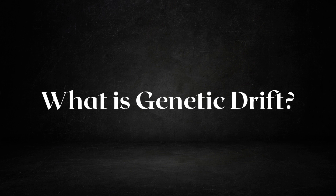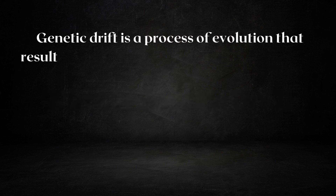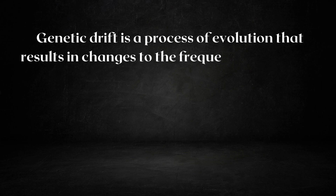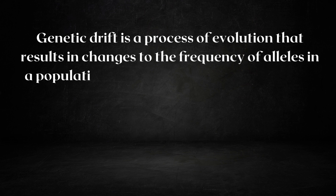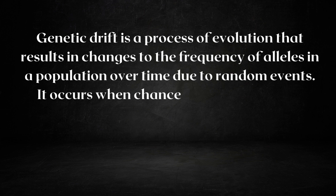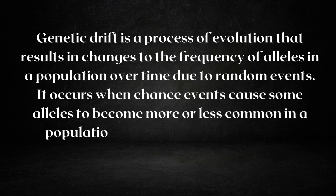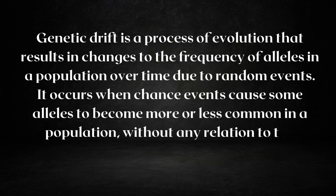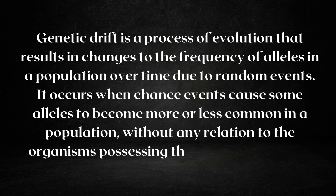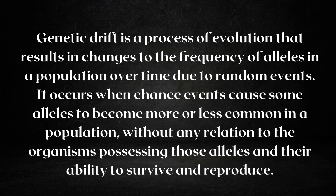Hey guys, welcome back to my channel. Today in this video we will discuss about genetic drift. Genetic drift is a process of evolution that results in change to the frequency of alleles in a population over time due to random events. It occurs when chance events cause some alleles to become more or less common in a population, without any relation to the organisms possessing those alleles and their ability to survive and reproduce.